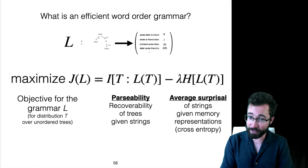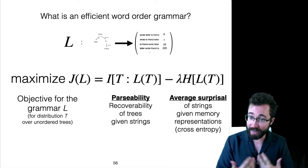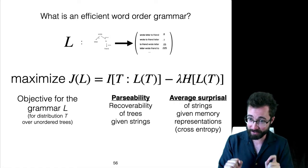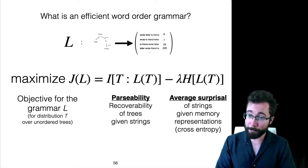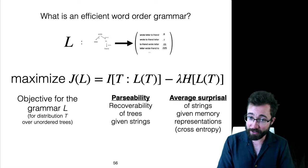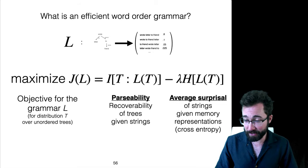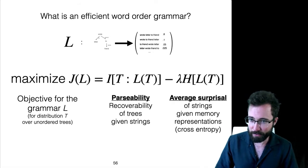More precisely, parsability here is actually going to be the mutual information, which is the average pointwise mutual information of trees and strings linearizing those trees. The complexity is going to be the entropy of strings. These two factors are going to be weighted by a trade-off parameter lambda, which is always 0.9 in all the studies I'm presenting here.